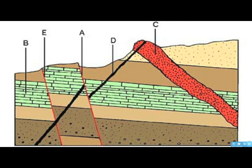Try that again. In this case, B is the oldest. Now — correcting myself — B was the oldest, followed by C, because D cuts across C up here, which means that C must be older than D. Then there's D, and finally A and E are formed.